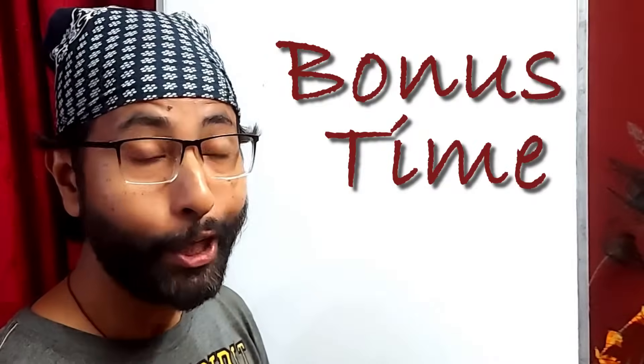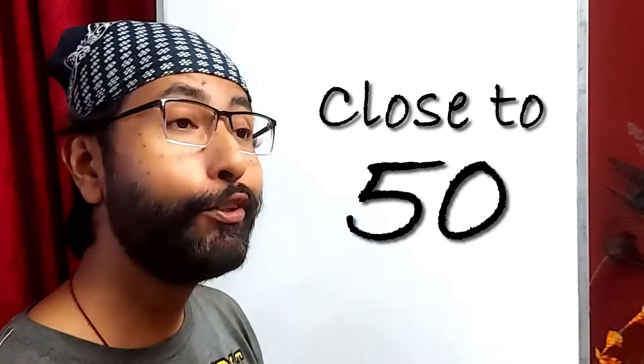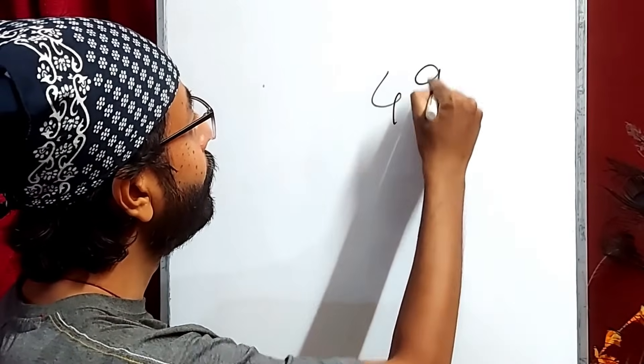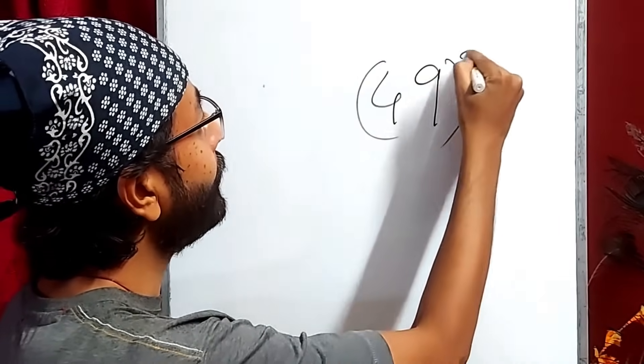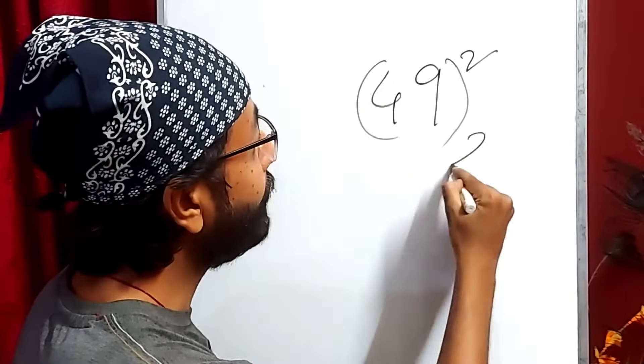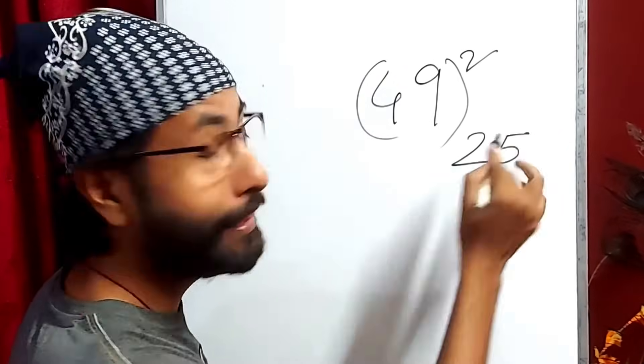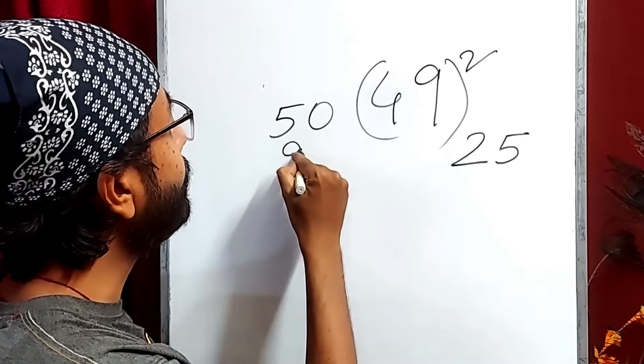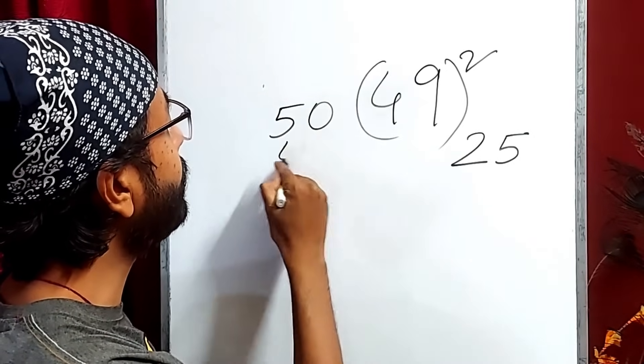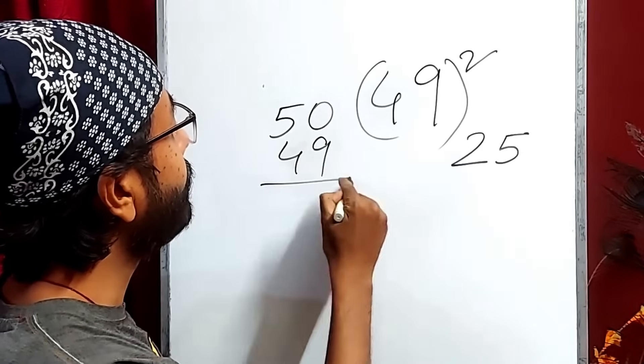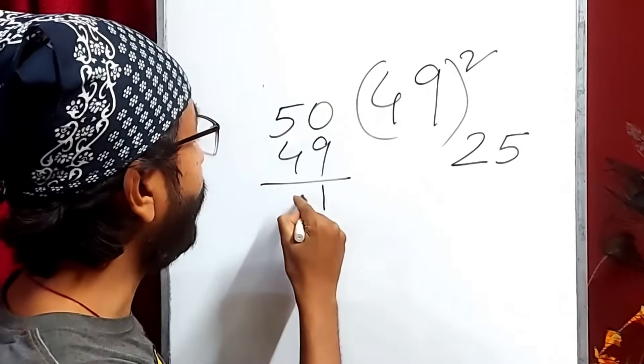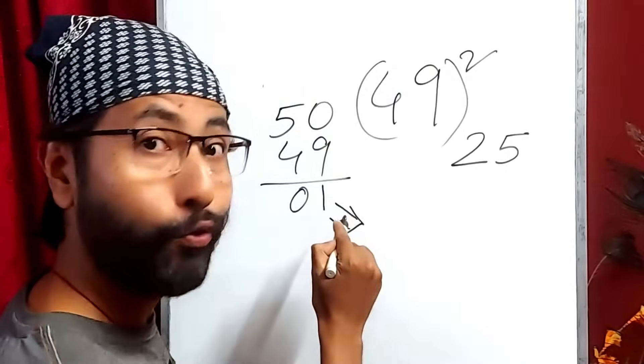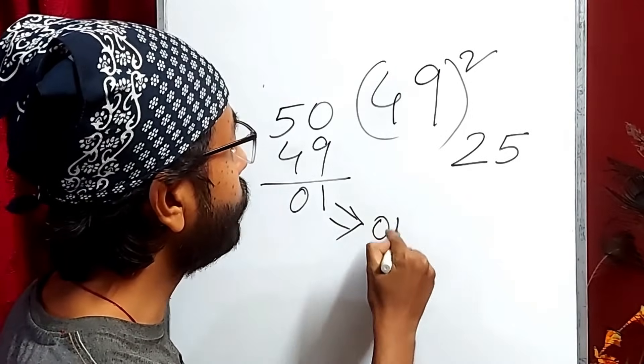It's a bonus time. So, whenever you get a number close to 50, you don't have to do that much. Let's try. Something like 49. Just write 25 somewhere, like this. And now 50 minus 49, that is 1, right? 1 is 0, 1. And the square of 1 is also 1, right? So, that is also 0, 1.